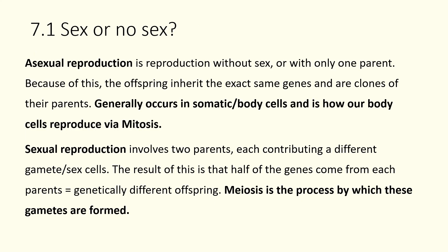First and foremost — sex or no sex. When we're looking at reproduction of organisms, there are two ways that organisms can reproduce: asexual reproduction and sexual reproduction. You will have learned about this in year 10. Asexual — 'a' in front of something tends to mean without — so it's reproduction without sex and with only one parent. Because we only have one parent, there's only one set of genetic material to choose from.